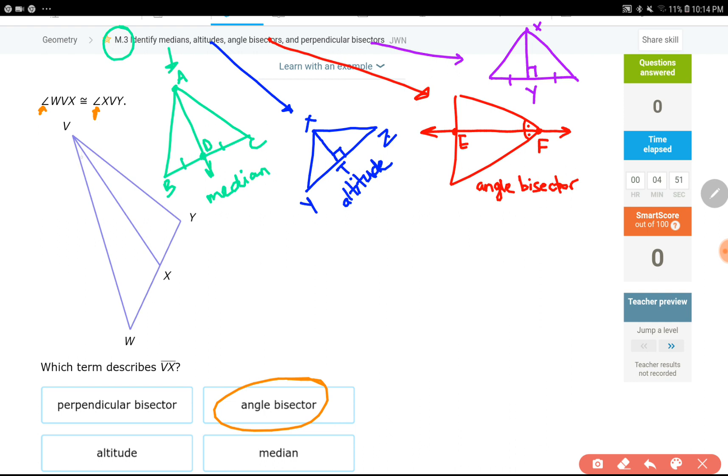Angle WVX is right here, this angle. And then angle XVY is that angle over here. So these two angles. And the question is asking for us to figure out the name of this guy over here. This right here cuts the angle in half. That is why it is called angle bisector. So moving on to the next level.